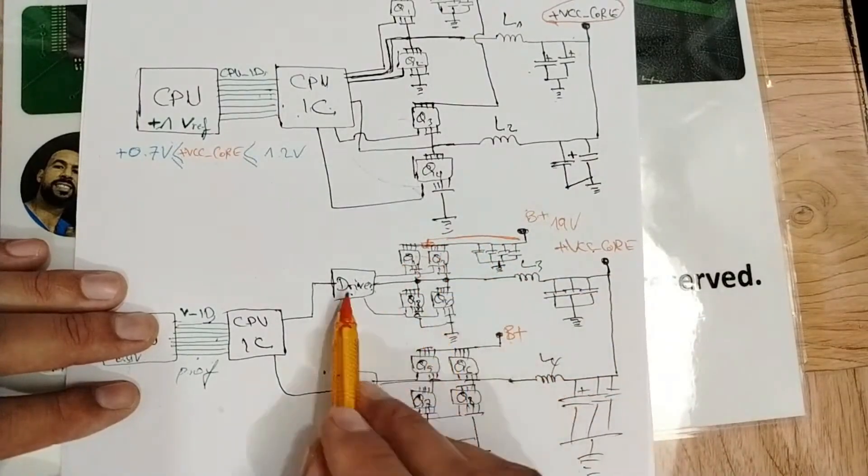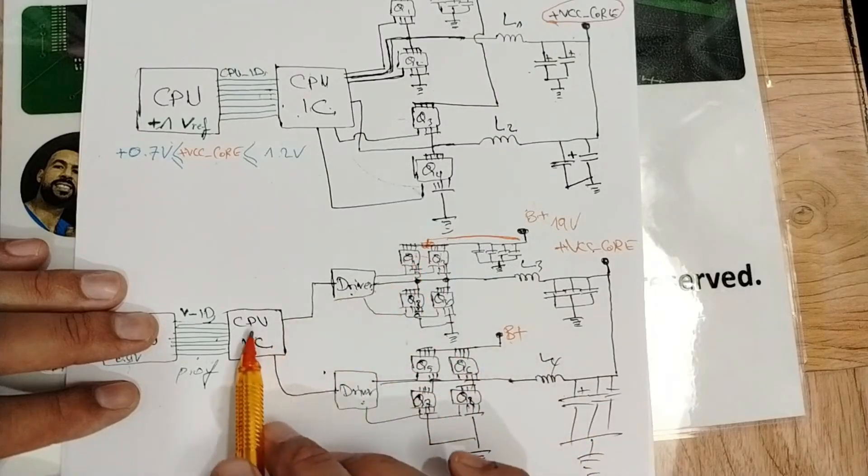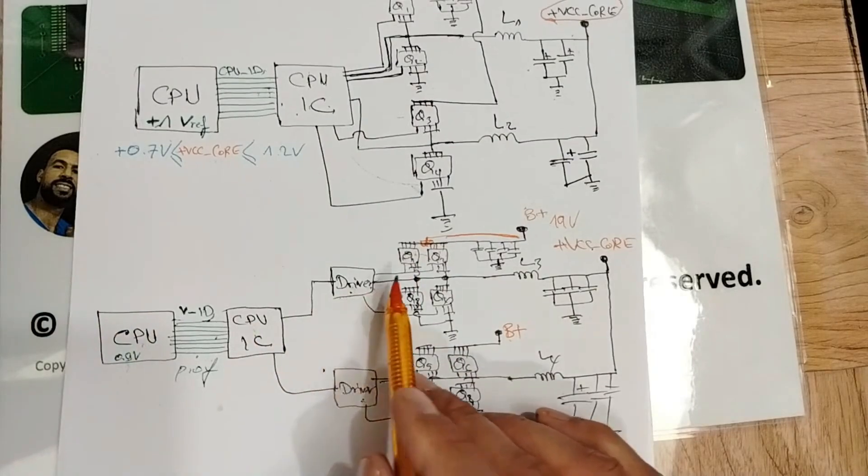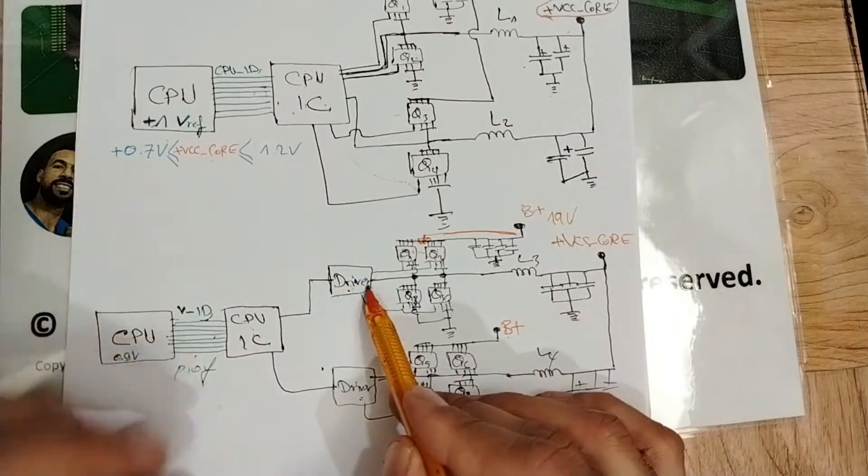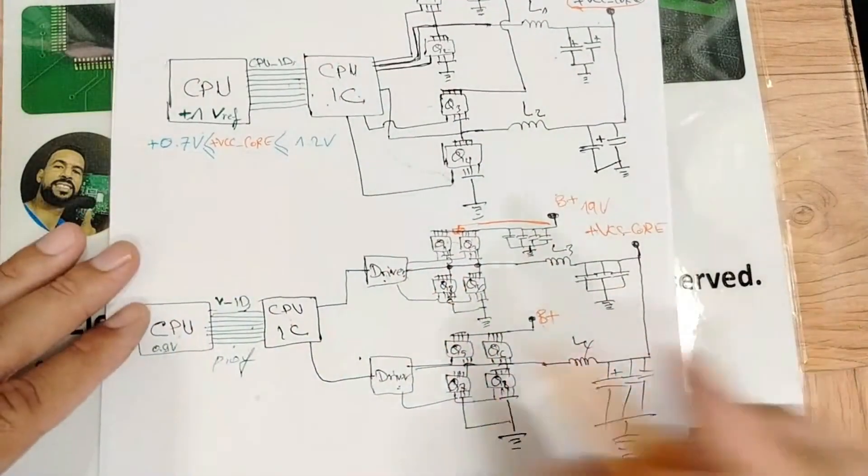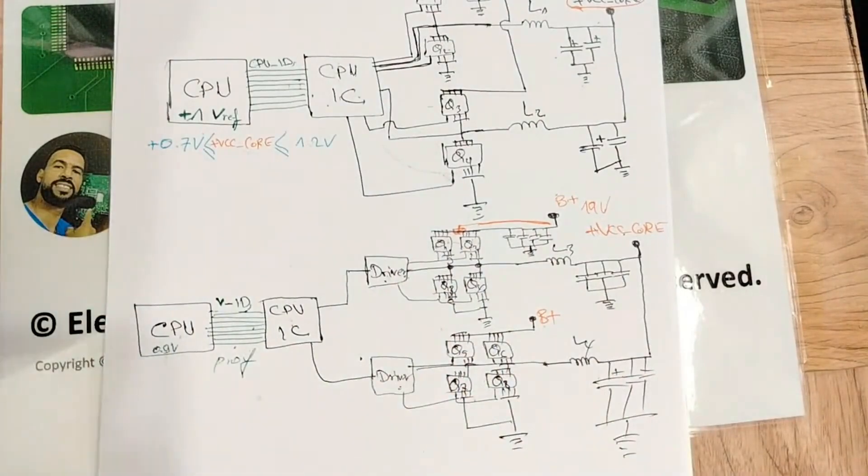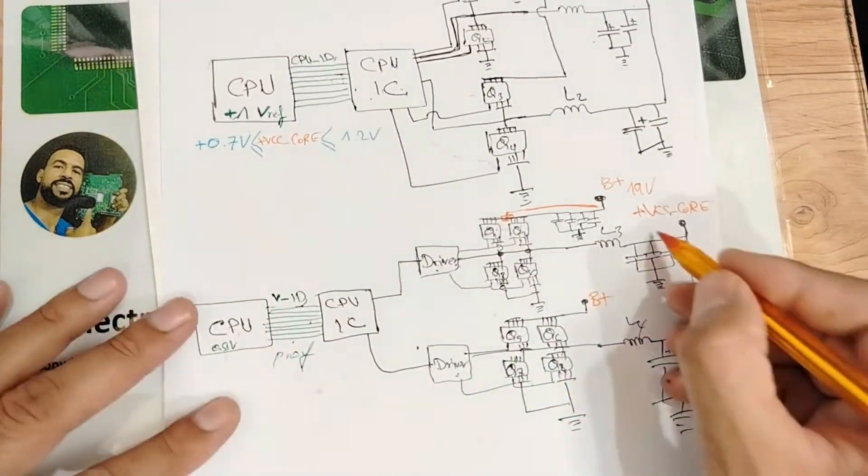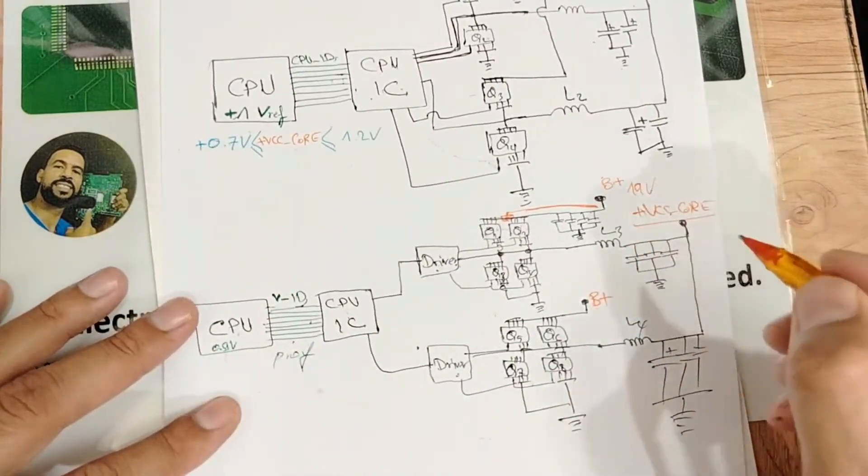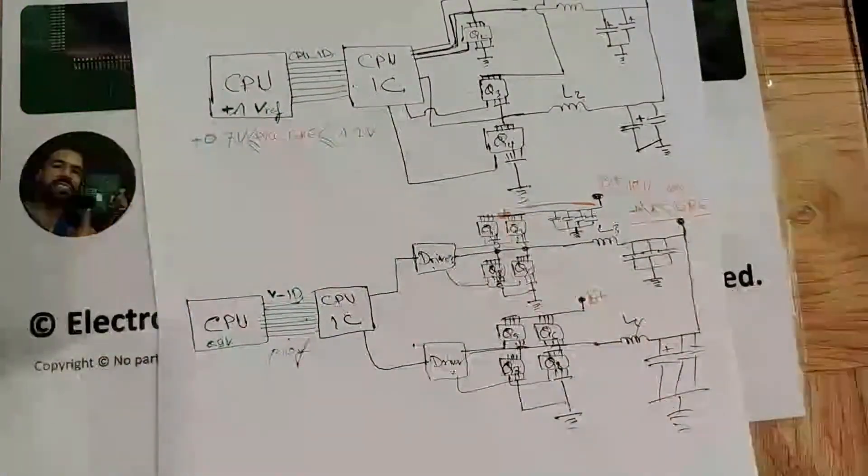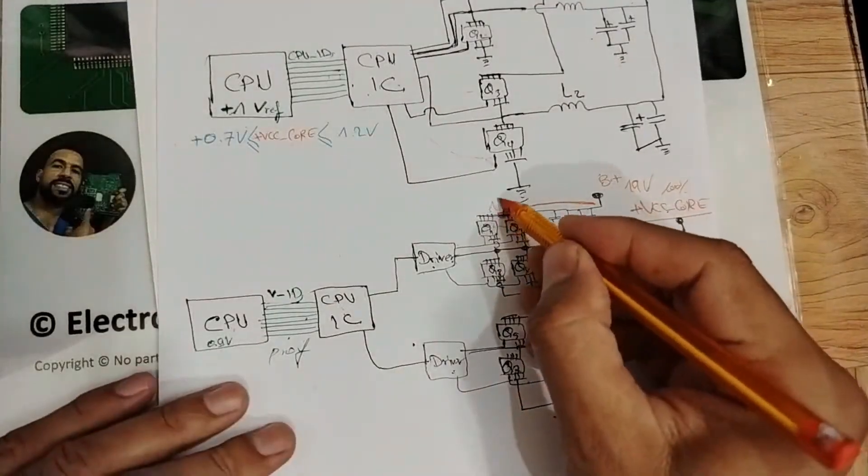The MOSFET is basically controlled by the CPU through the driver. This driver is used here just to make things very accurate, because for the CPU we always have more components. We need a very pure, exact voltage, 100% exact voltage for the CPU.